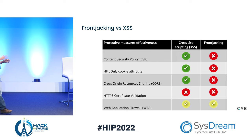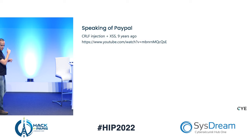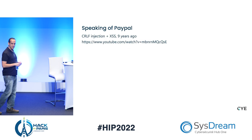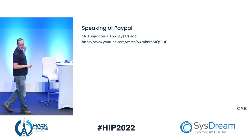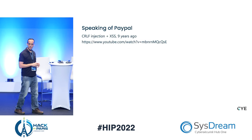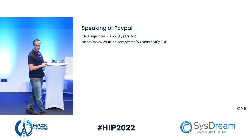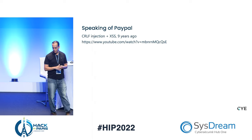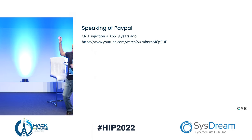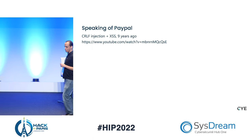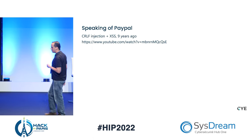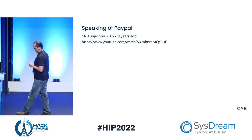The only thing partially effective against front-jacking is web application firewalls — some of them identify this as an attack. Although it's not a known attack, the special characters make them stop it. The related CWEs are: user interface misrepresentation of critical information, and also close to cross-site scripting but not exactly.